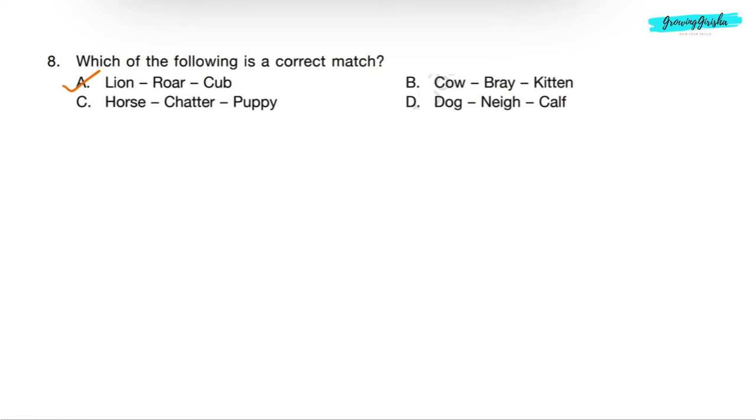Let's see the other options as well. Option B: Cow. Sound of cow is moo and its young one is called calf. Option C: Horse. Sound of horse is neigh and its young one is called foal. And option D: Dog. Sound of dog is bark and its young one is called puppy.